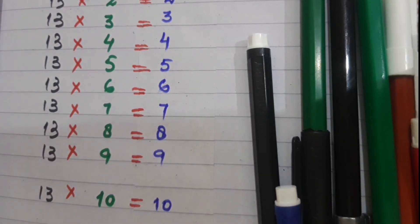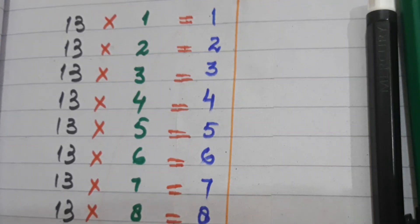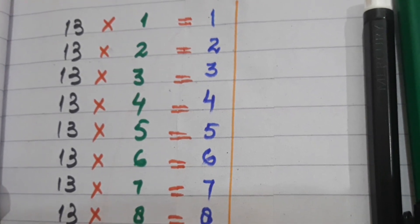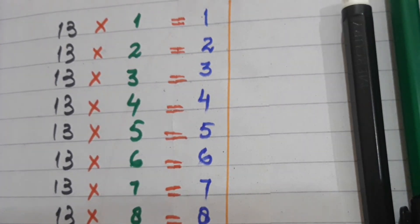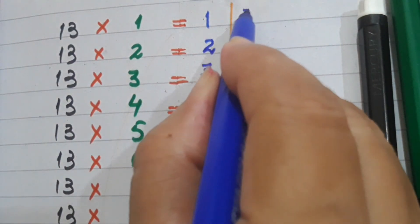We will write the counting from 1 to 10 here, and then we will write the table of 3, just like you can see in this video. Now we will write the table of 3, and everyone knows the table of 3 definitely.